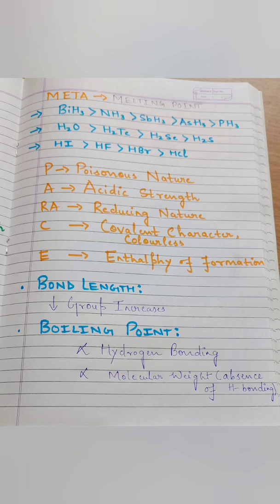Coming to the next part — META. Meta stands for Melting point. This applies to Group 15, Group 16, and Group 17 hydrides. PARA SAVE tells you those properties which increase down the group. Note that there are some exceptions here which are very important and frequently asked.